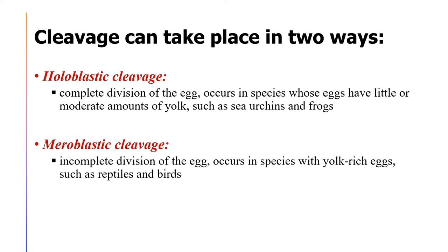Cleavage can take place in two ways. First is holoblastic cleavage, where there is a complete division of the egg. It occurs in species whose eggs have little or moderate amounts of yolk, such as sea urchins and frogs. The second is meroblastic cleavage, which is an incomplete division of the egg, and it occurs in species with yolk-rich eggs, such as reptiles and birds.